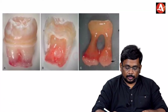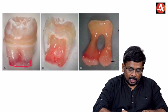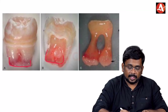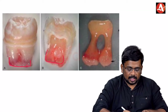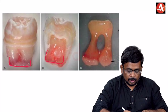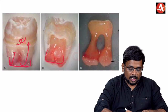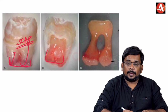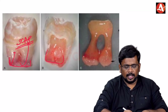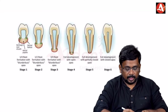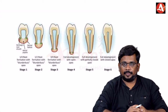In regenerative endodontics, when the periapical area is pricked with a file, laceration of the apical papilla occurs. Stem cells from the apical papilla (SCAP) are released and enter the root canal to help in regeneration.